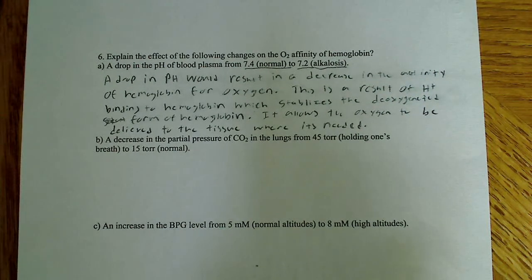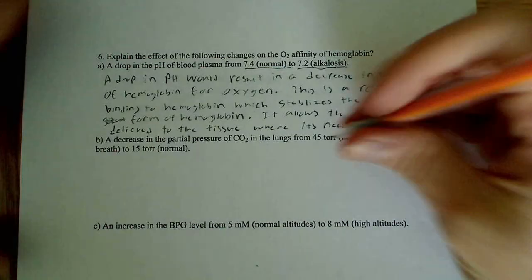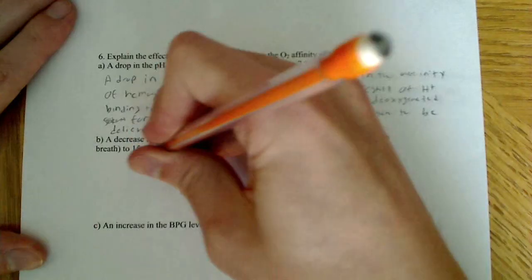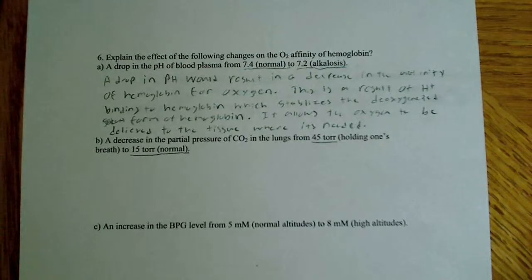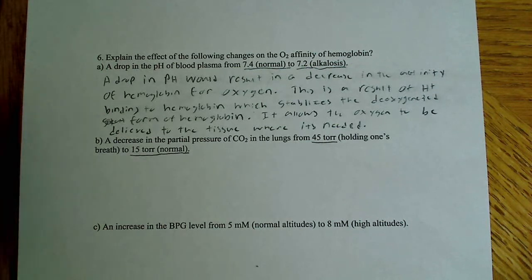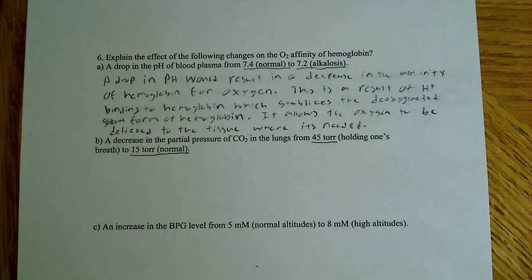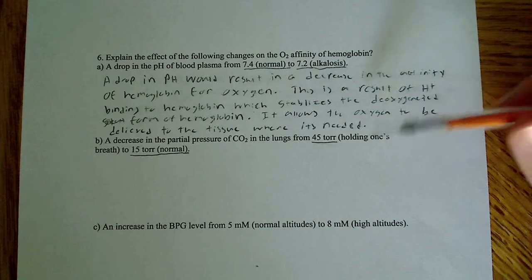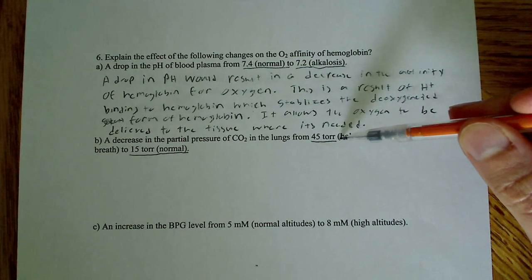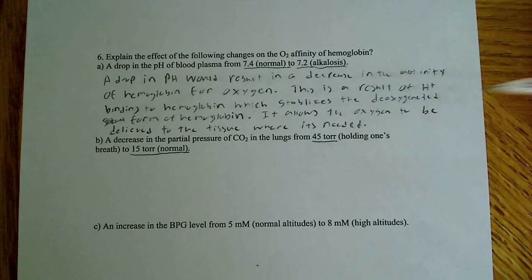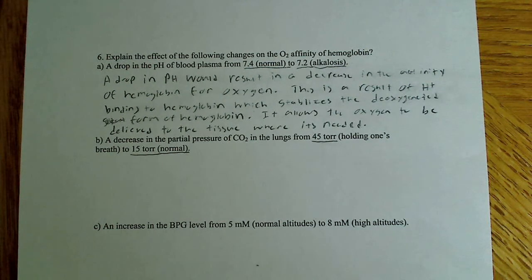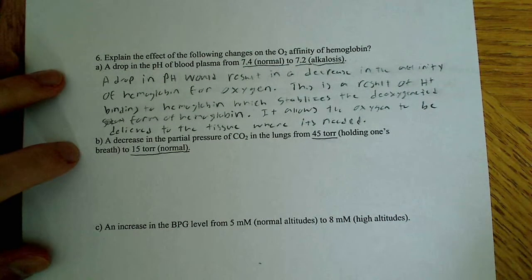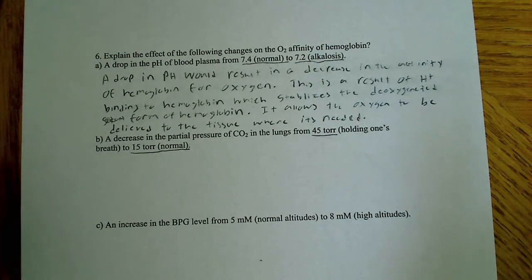The next one says a decrease in partial pressure of CO2 in the lungs from 45 torr, holding one's breath, to 15 torr under normal conditions. We want to explain how the O2 affinity of hemoglobin will change. We know that CO2 binds hemoglobin at the amino terminal end to form a carbamate, and this stabilizes the deoxygenated form. Almost all of these allosteric effectors stabilize the deoxygenated state.